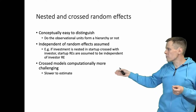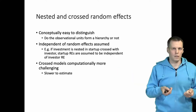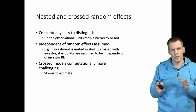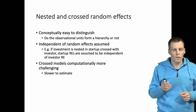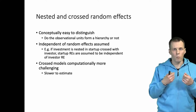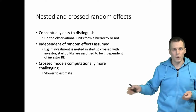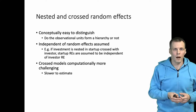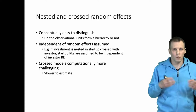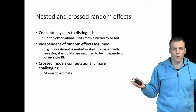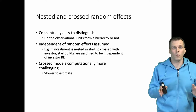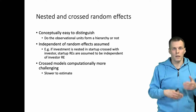Crossed models are computationally more challenging. It's fairly straightforward to specify in your software that instead of a nested structure, which is the default, you want a crossed structure for some of the random effects, and the computer will handle that. But the calculation is more complicated — it just takes longer to estimate. If you have a nested model that runs in 10 seconds, running the same model with crossed effects could take 10 minutes or more, depending on your software, computer, sample size, and how the computation is implemented.